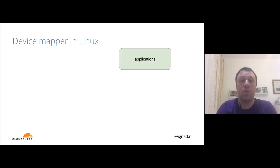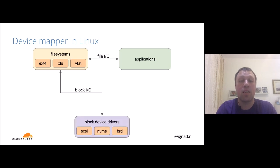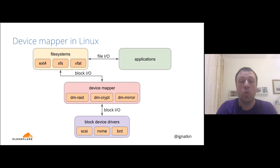To talk about dm-crypt, we need to review the device mapper framework in Linux first. Device mapper can insert itself between the filesystem and the block device drivers and intercept blocks as they travel through the stack, providing additional functionality. We have dm-raid for software RAID arrays, dm-mirror for data backup, and the topic of this presentation: dm-crypt, which transparently encrypts the data.